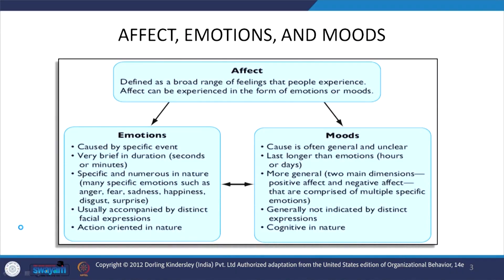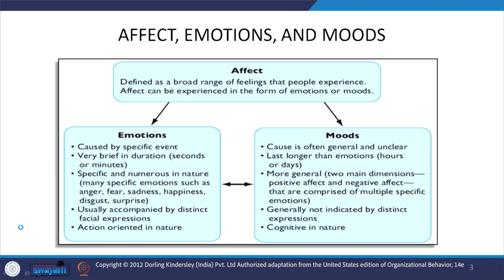When we talk about moods, the cause is often general and unclear. Moods last longer than emotions — hours or days. As compared to emotions, which are very brief in seconds or minutes, moods last hours or days. Moods are more general, with two main dimensions: positive affect and negative affect, comprising multiple specific emotions. Moods are generally not indicated by distinct facial expressions and are cognitive in nature, while emotions are action-oriented.